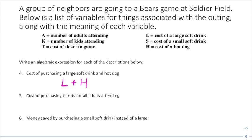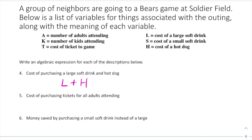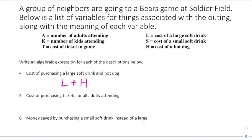Next: the cost of purchasing tickets for all of the adults attending. To find the cost for all adults, we take the number of adults times the cost of a ticket. For example, if tickets cost $20 and three adults are attending, that's 3 times 20 equals $60. We don't know how many adults are attending, but that number is represented by A, and the ticket cost by T, so the expression is A times T.